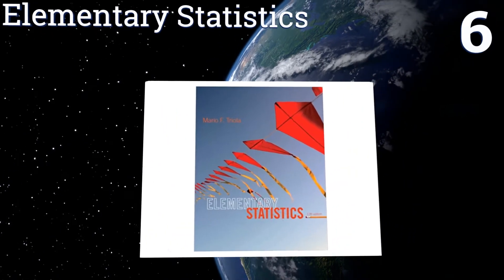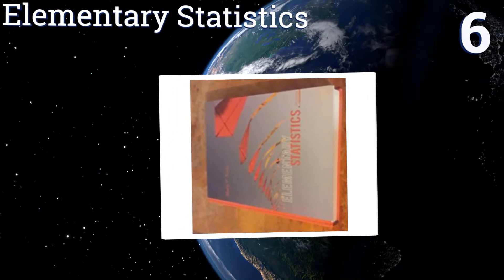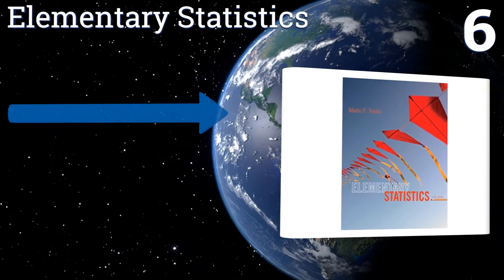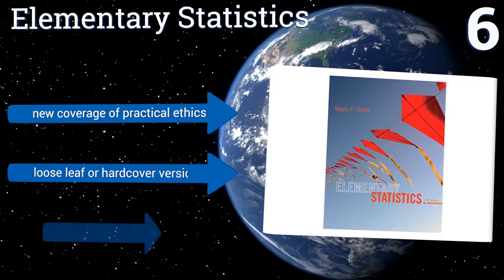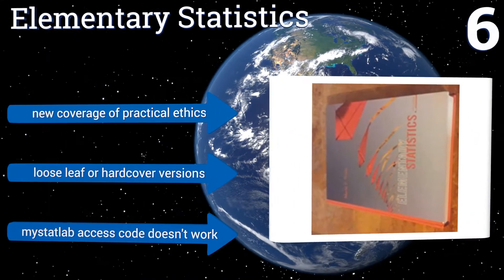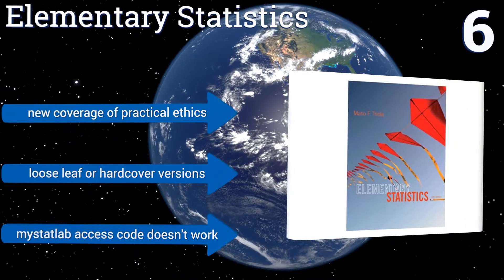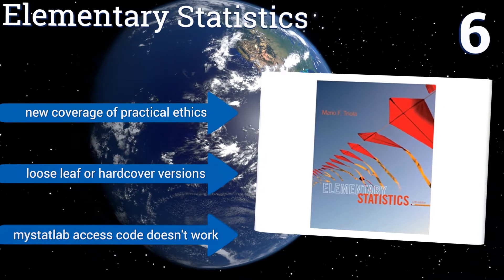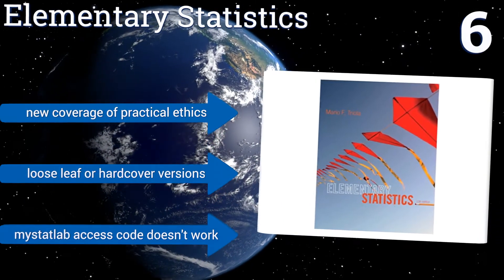At number six, Elementary Statistics by university professor Marty Triola continues to be a bestseller because of the way it connects relatively obscure theory with real-world application. The 12th edition contains more than 1,800 exercises, 89 of which use actual data. It includes new coverage of practical ethics and is available in looseleaf and hardcover versions.